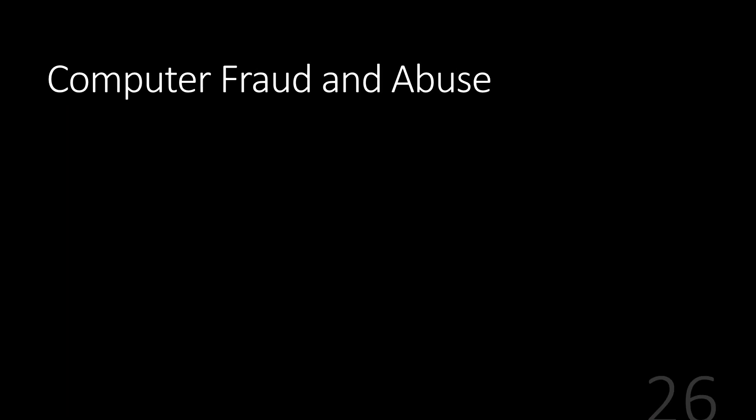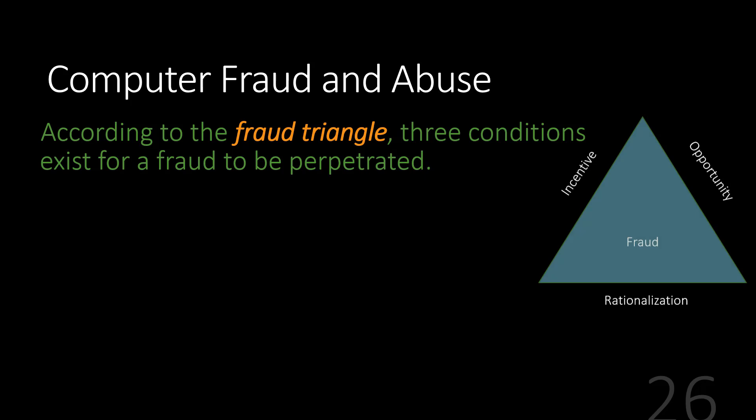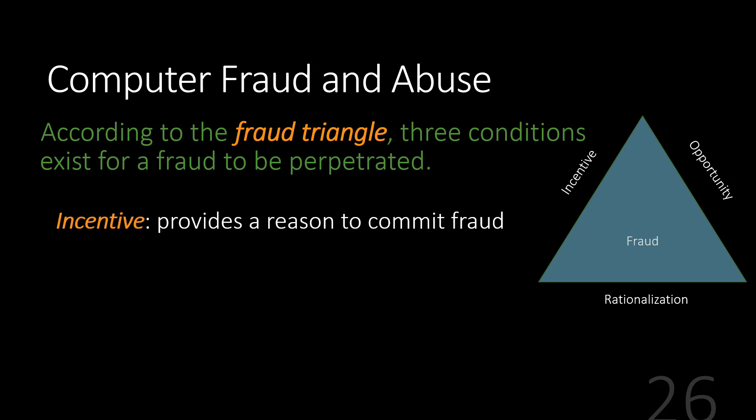You may have heard of the fraud triangle. According to the fraud triangle, we need three conditions for a fraud to be perpetrated. First, we need some kind of an incentive — some reason to commit the fraud. That could be I'm behind on my mortgage, I'm greedy, I'm bored, I just want a challenge. Whatever it happens to be, I have some kind of a reason that I want to steal money, take the system down, or change Bob's salary.